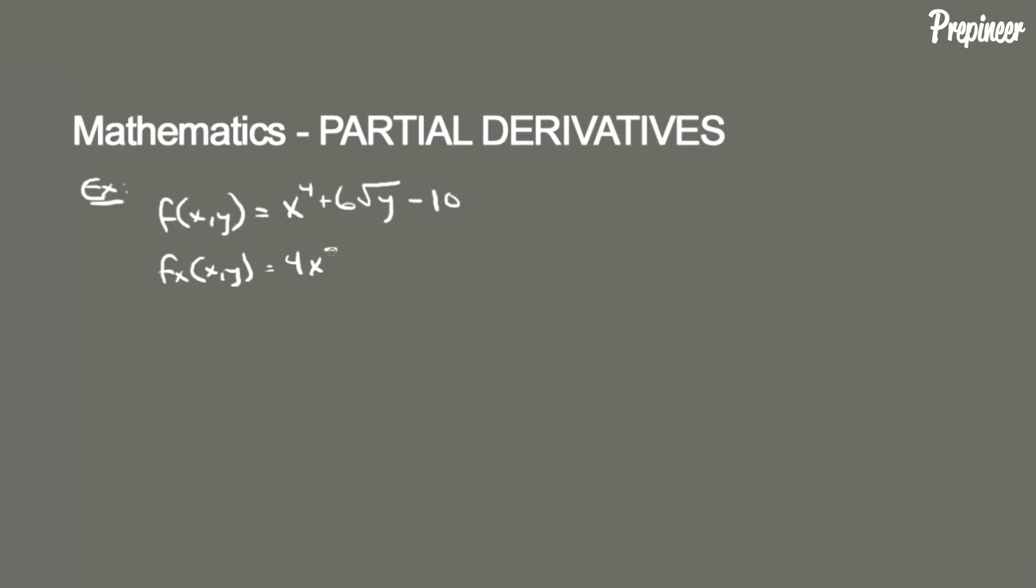Notice that the second and third terms differentiate to zero. It should be clear why the third term differentiated to zero because that's a constant. The second term also differentiated to zero because we're treating any y variable as a constant, so that differentiates out.